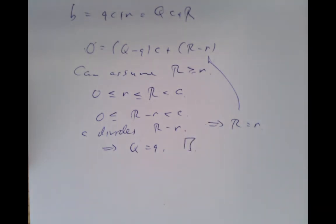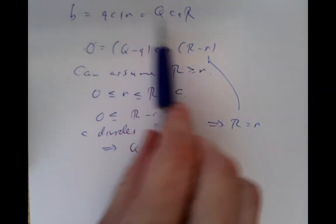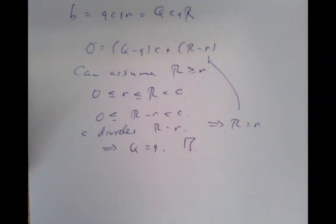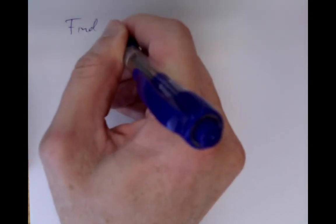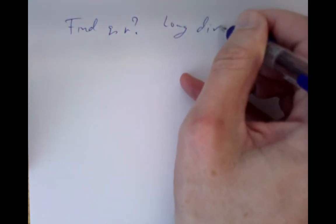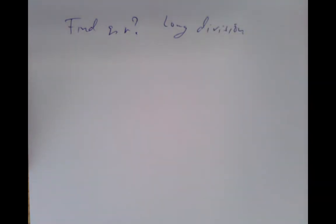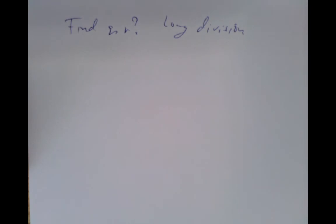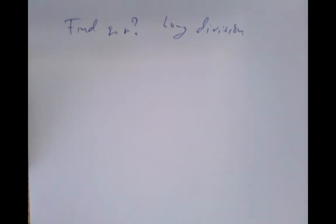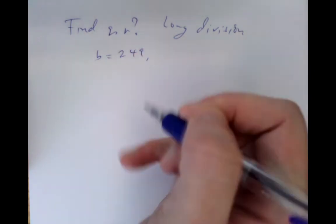Now that's very theoretical. But practically, how do you calculate quotients and remainders? You already know how to do this by long division. I'm not going to go into long division for two reasons: one, you already know it; and two, long division is done very differently in different countries with different notation. So I won't do any long divisions in front of you.